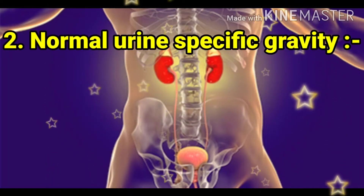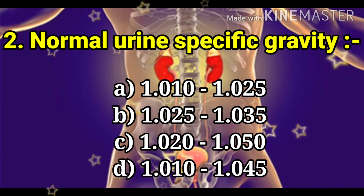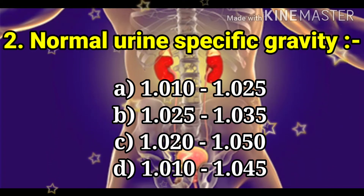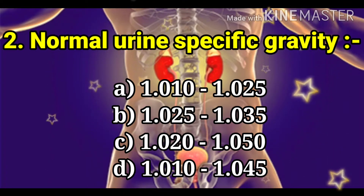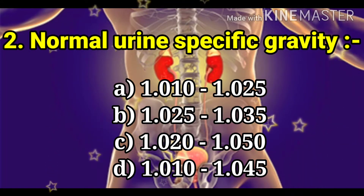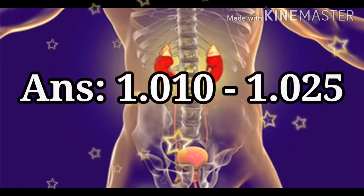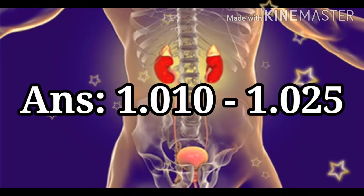Second question: normal urine specific gravity. The options are 1.010 to 1.025, 1.025 to 1.035, 1.020 to 1.050, and 1.010 to 1.045. The answer is 1.010 to 1.025.